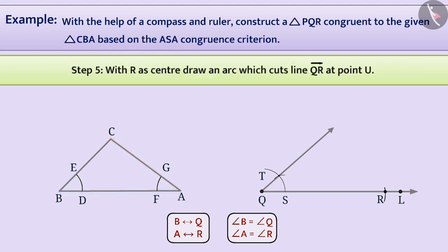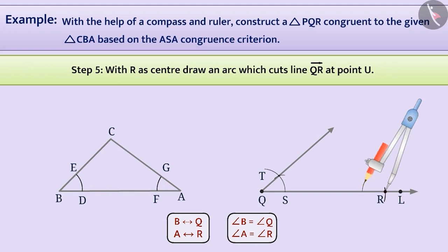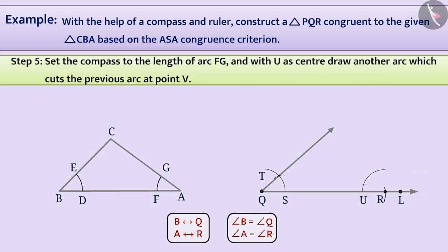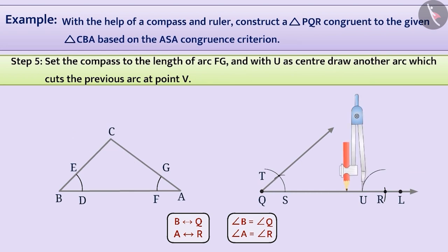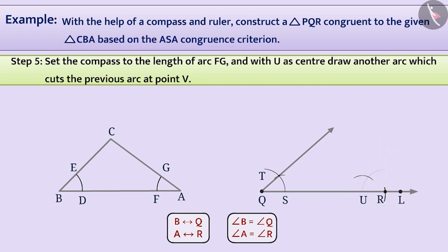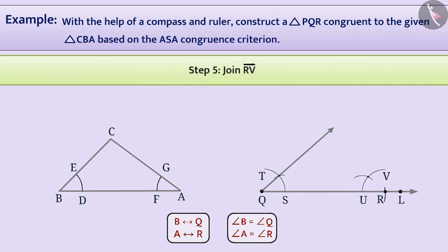Using the same radius and with R as centre, draw an arc which cuts line QR at point U. Set the compass to the length of arc FG. Without changing the compass setting, with U as centre, draw another arc which cuts the previous arc at point V. Next, we join points R and V to form a ray RV.